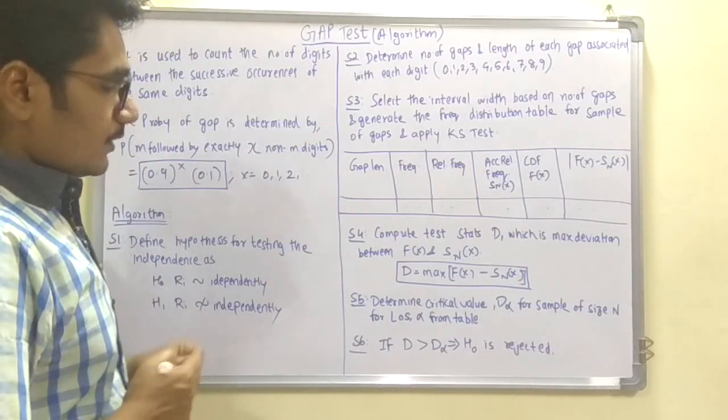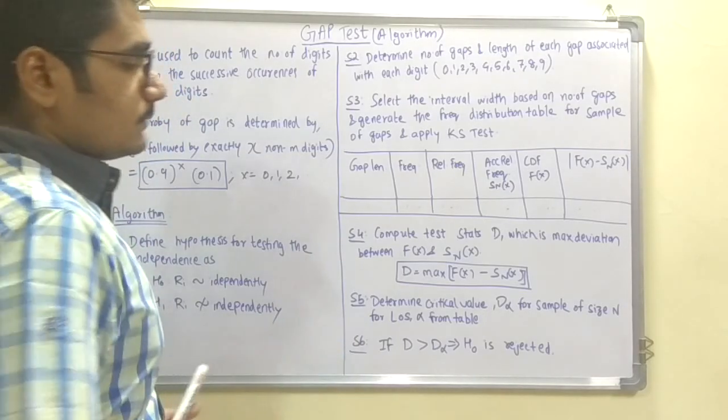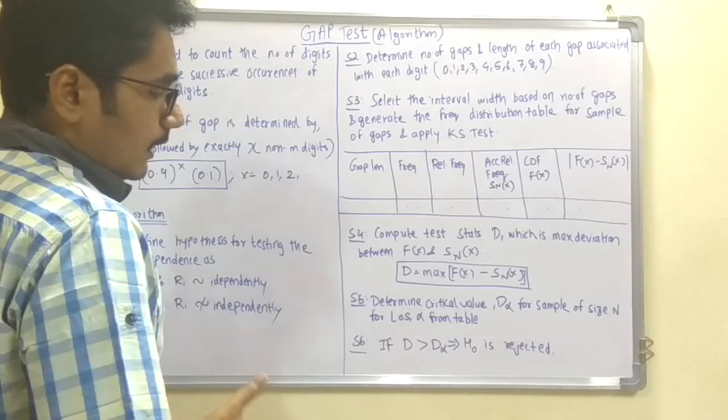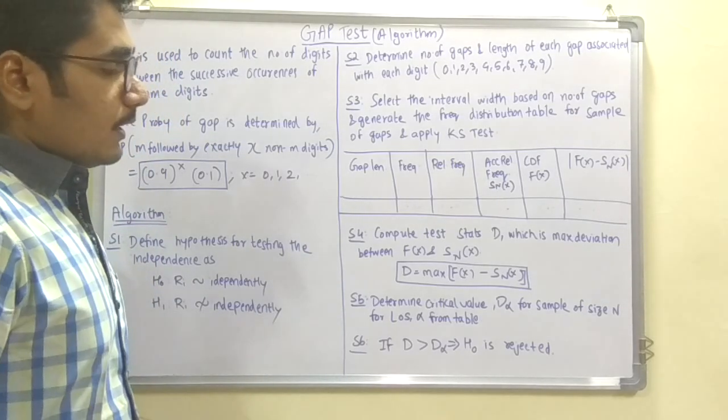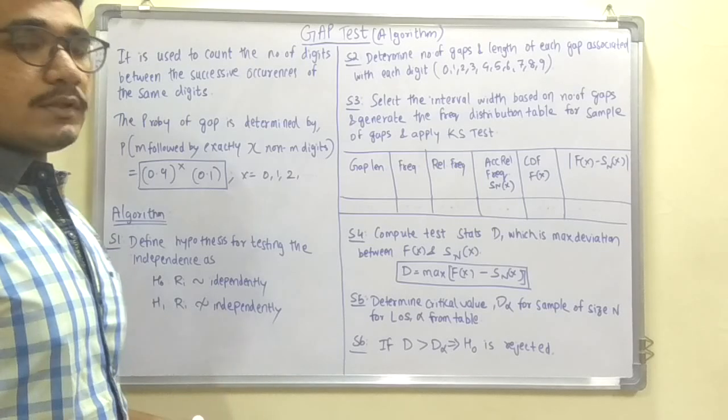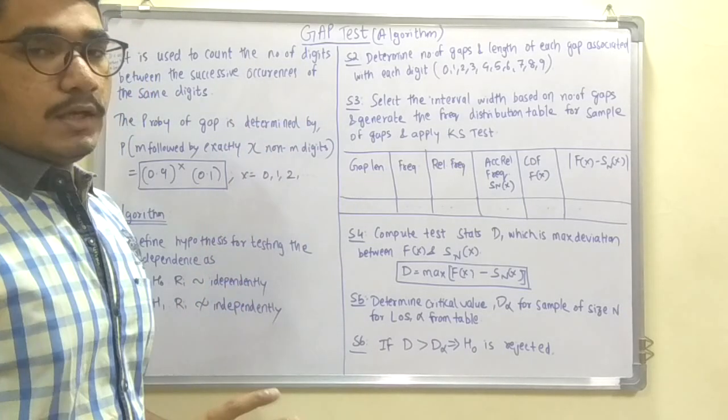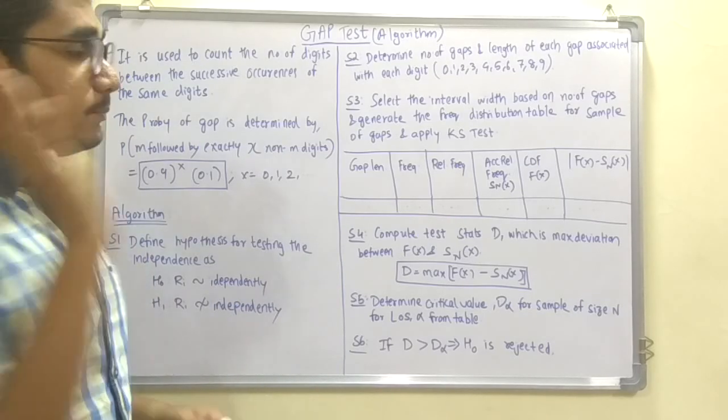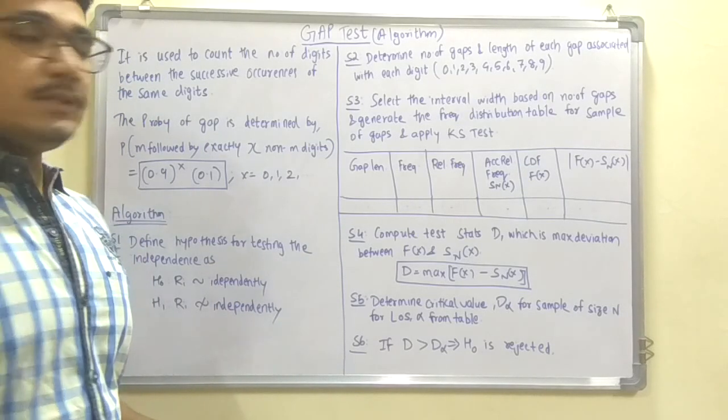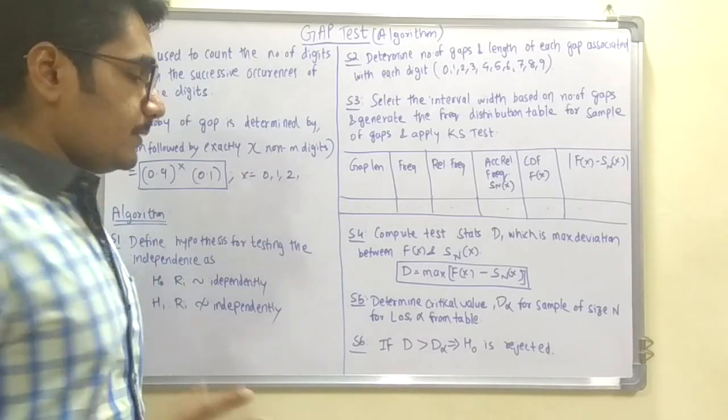Next, you determine the critical value d_alpha for the sample of size n and level of significance alpha from the table. This step remains the same for the KS test. In the previous video I discussed the POCUS test, which uses the chi-square test, whereas in gap test you use the KS test. You have to keep that in mind.